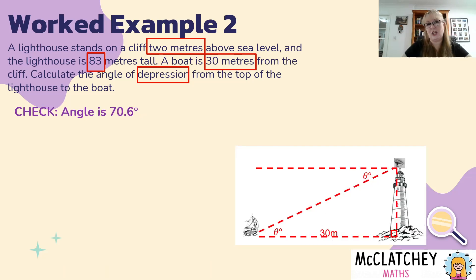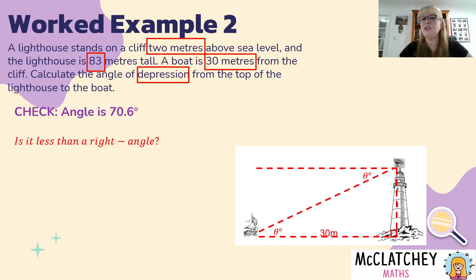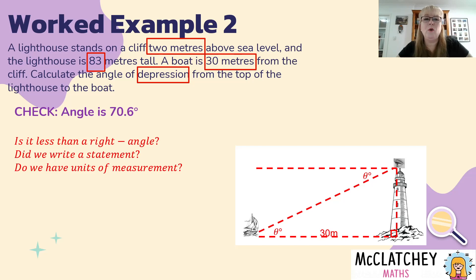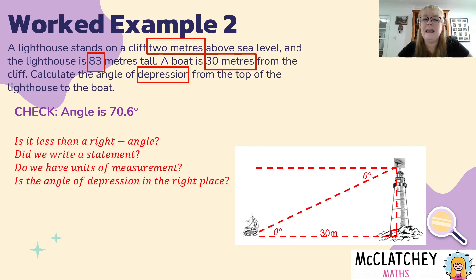Now it's time to do the sanity check. Does it make sense that the angle is 70.6 degrees? Firstly, is it less than a right angle? Yes — it has to be less than 90 degrees since it's inside a right-angle triangle, and it can't be negative either. Did we write a statement? Yes. The angle is 70.6 degrees, and we have the degree symbol as our unit of measurement. Also a good idea to double-check your diagram and make sure you've put the angle of depression in the right place — a common mistake is putting it inside the triangle at the top of the lighthouse when it should be on the outside.